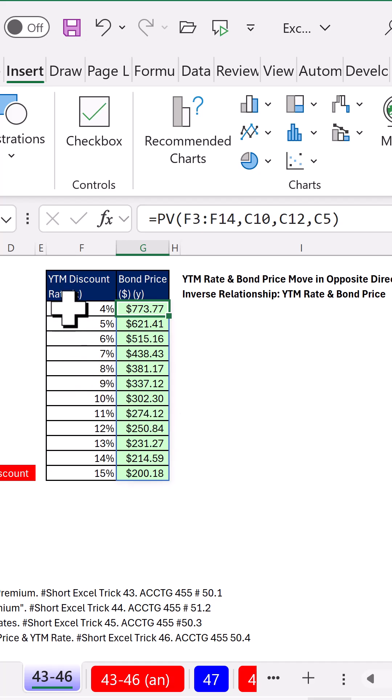All right, here's our yield to maturity, smallest to biggest, and our bond prices. They're inversely related, but we want to visualize.